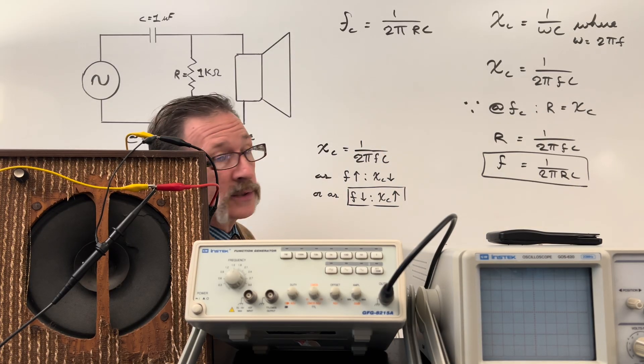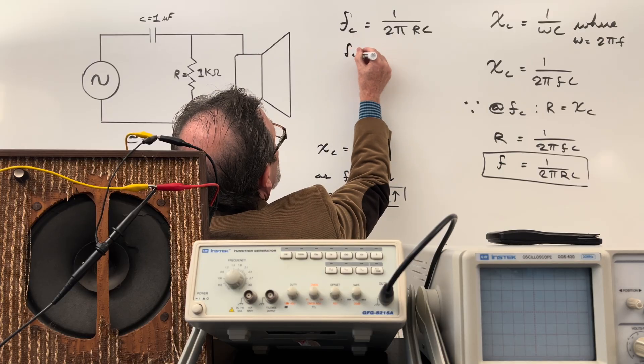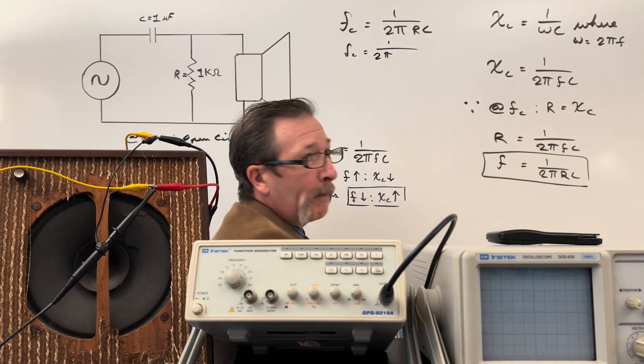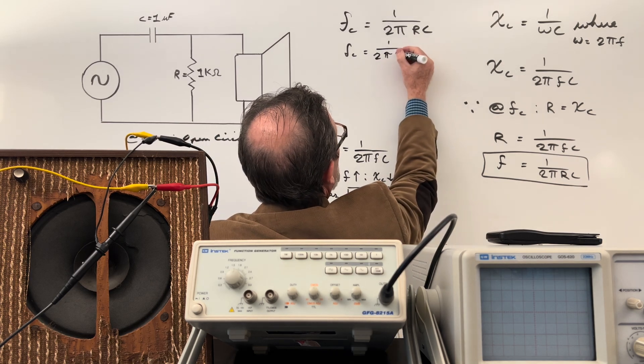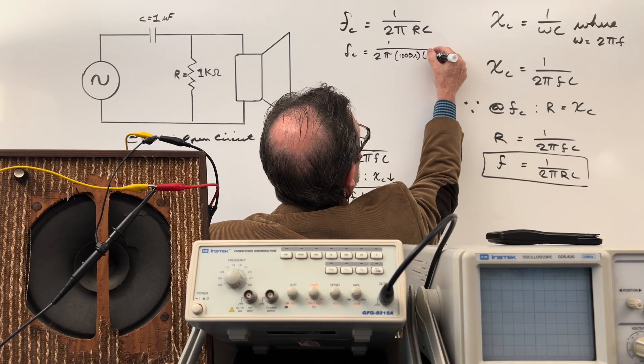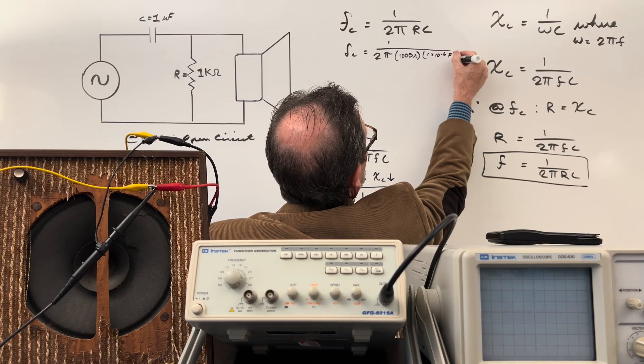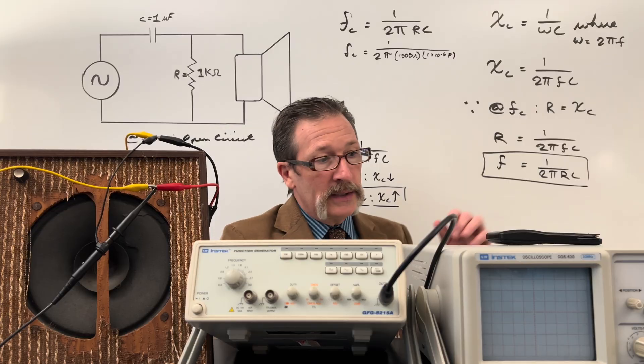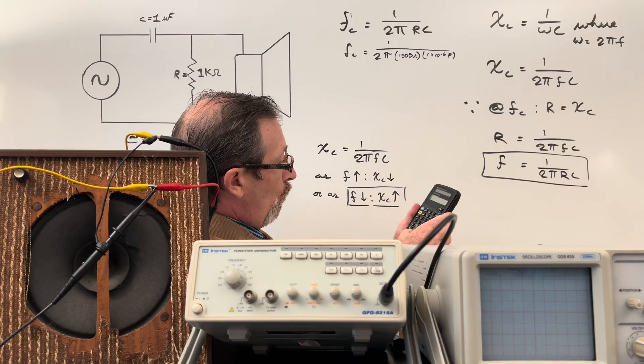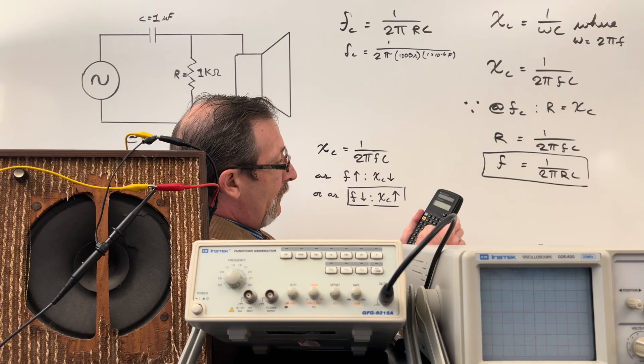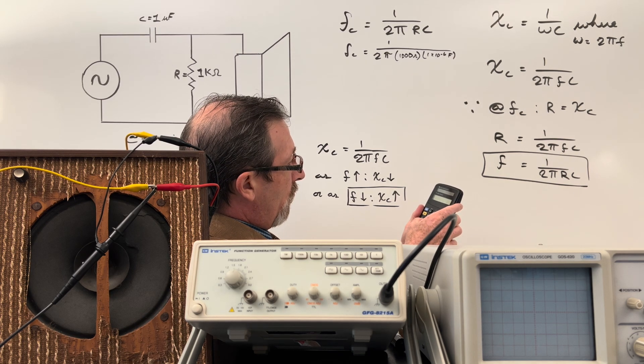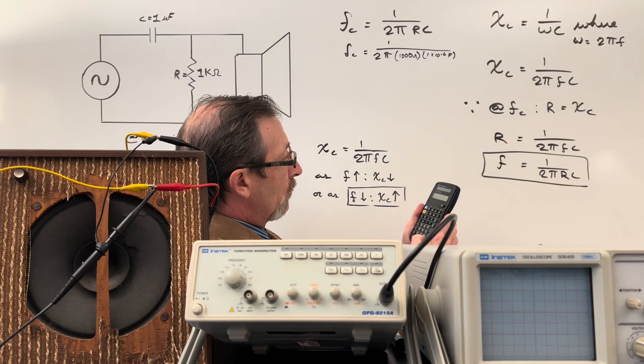We still need to figure out what that frequency cutoff was, so let's do that now. We can just plug in our numbers. The frequency is 1 over 2π - I'll leave it as the π symbol because I'm running out of room. Here I'll put 1000 ohms and then my cap of 1×10^-6 farads. Let me put this into my calculator: 1 divided by 2 divided by π divided by 1000 divided by 1×10^-6 equals 159.